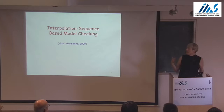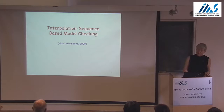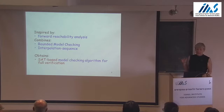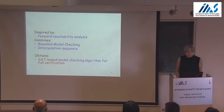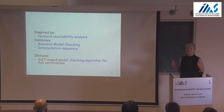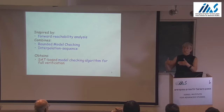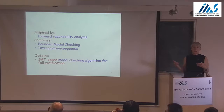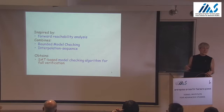My feeling is that this way it's easier to understand, though someone else might claim the opposite. The SAT-based interpolation sequence model checking is inspired by forward reachability analysis. In general, it means that we start from the initial state, go to the next state and the next and the next, looking for a bug. We can find a fixed point which tells us that if we didn't find the bug so far then we are safe and can return full verification. This is what we have in mind, but we want to simulate it within SAT.